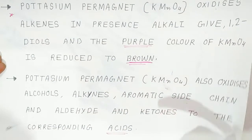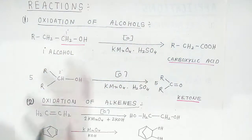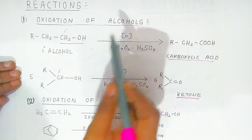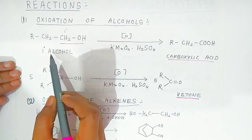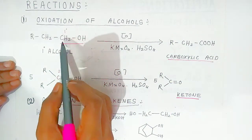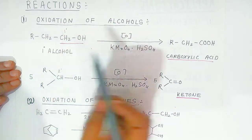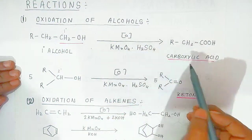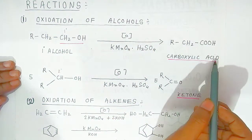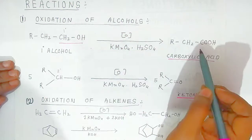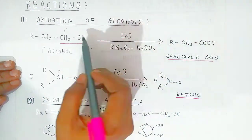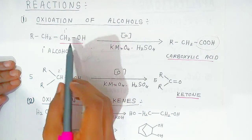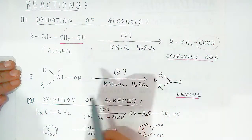We are going to see these reactions with the help of examples. First reaction: oxidation of alcohol. Here primary alcohol, where OH is attached to the first degree carbon, when oxidized in presence of KMnO4 in acidic medium, it will oxidize to carboxylic acid. That means the CH2OH group is converted into a COOH group — oxidation of alcohol into carboxylic acid.